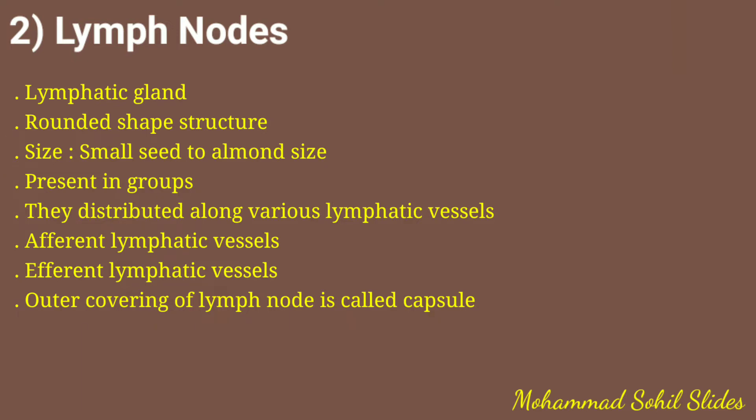Lymph nodes are distributed along various lymphatic vessels. Lymph passes through at least one lymph node before entering the blood. Afferent lymphatic vessels carry lymph to the lymph node, while efferent lymphatic vessels carry lymph away from the lymph node.